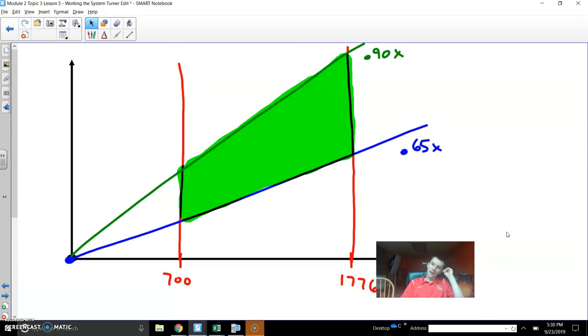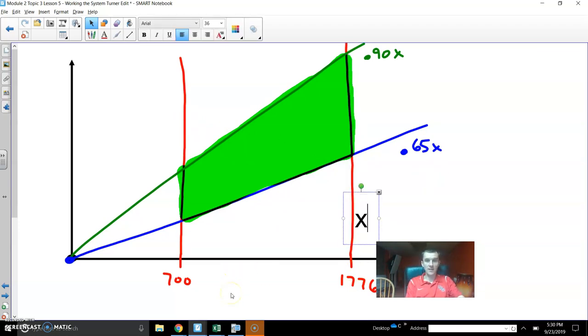So I went ahead and thought about this graphically. So we want between 700 and 1776 in terms of X. X has got to be between those. So that begins my shading. And then to graph 0.90X and 0.65X, that gives us two lines and you want them between that because you want it to, you know that it's going to sell between 65% and 90%. And so any point in here is a solution to the problem.